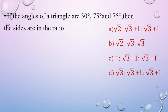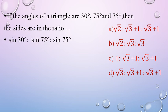Next question: if the angles of a triangle are 30°, 75°, and 75°, then the sides are in what ratio? We have one triangle with angles 30°, 75°, and 75°. We need to find the sides in ratio. We need the sin 30° value and sin 75° value to use.